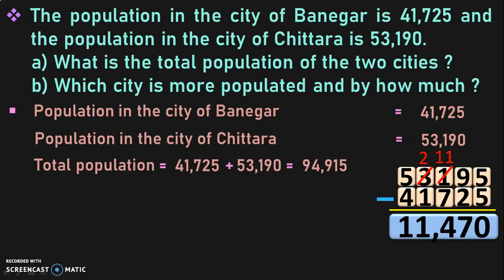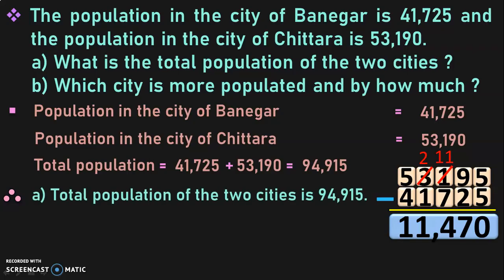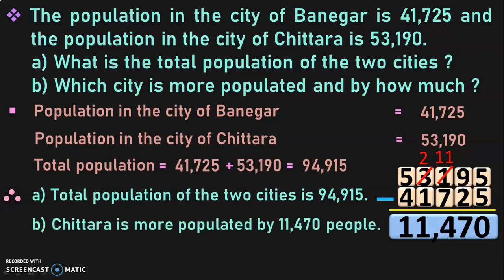This difference — 11,470 — is the population by which Chittara is more than Banegar. Now let us write down the answers, which is the last step. Step 1: write the statements. Step 2: do the calculations. Step 3: write the answer. A) The total population of the two cities is 94,915. B) Chittara is more populated by 11,470 people. Basically: read the problem, write the statements, do the calculation, and write the answer.